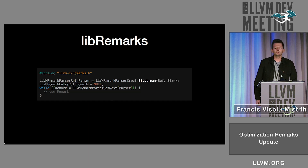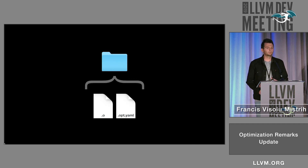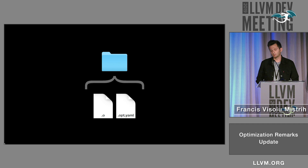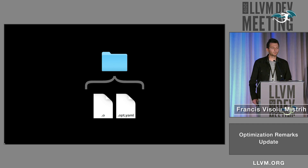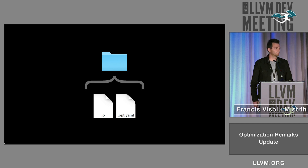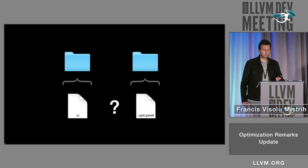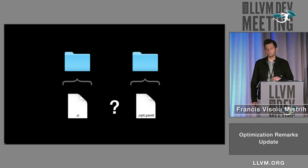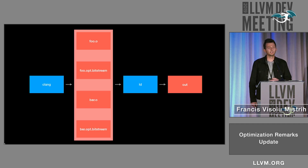Tools right now usually look for remarks which are right next to the object file, because that's how Clang emits them. Or they might look for the extension opt.yaml, but this might not always be true. It may be that for LTO or just more complex build systems this is not true. And we want to integrate remarks as part of the whole compilation process, and we're trying to add a link between the object file and the remark file.